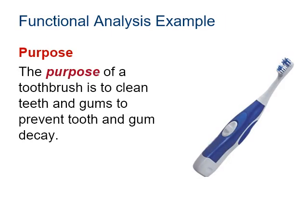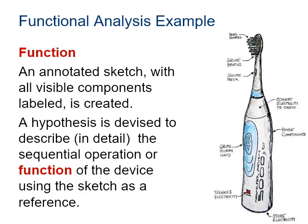Looking deeper into functional analysis, the middle step of reverse engineering, we start by examining purpose. For example, the purpose of a toothbrush is to clean teeth and gums and prevent tooth and gum decay. Next we examine function using an annotated sketch — one with explanatory notes where all visible components are labeled. A hypothesis is then devised to describe in detail the sequential operation or function of the device using the sketch as reference, explaining the different components of an electric toothbrush and their functions.